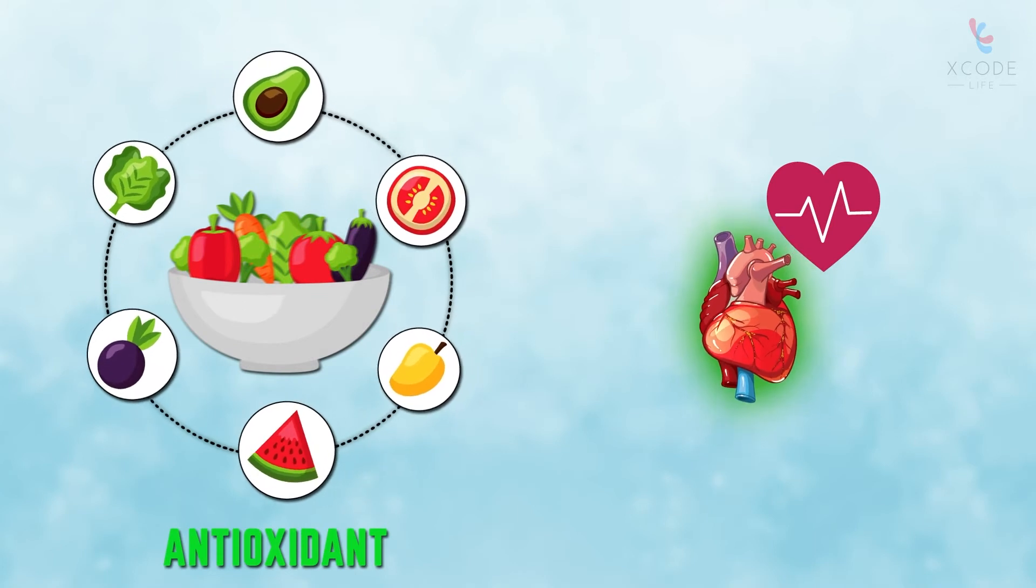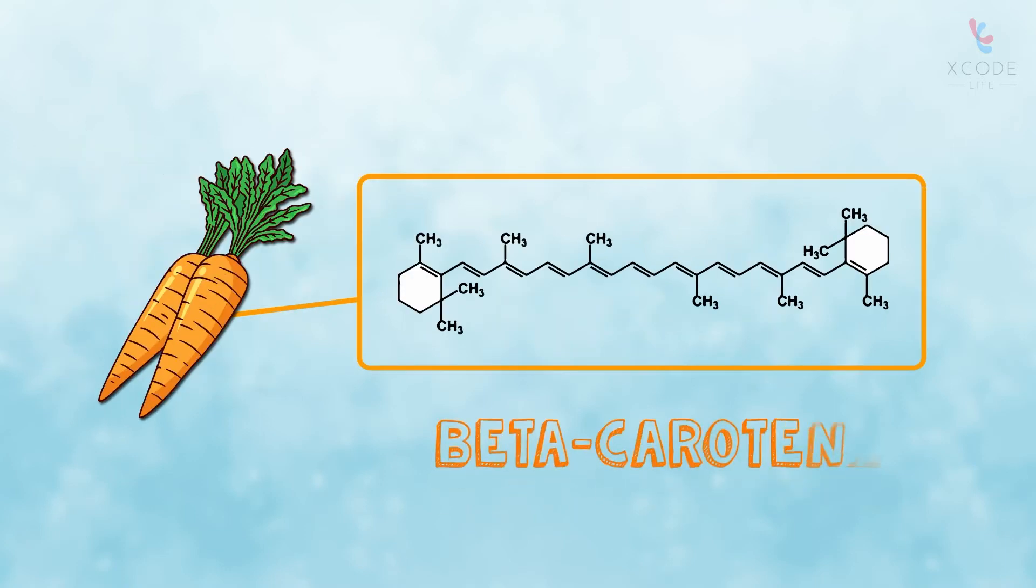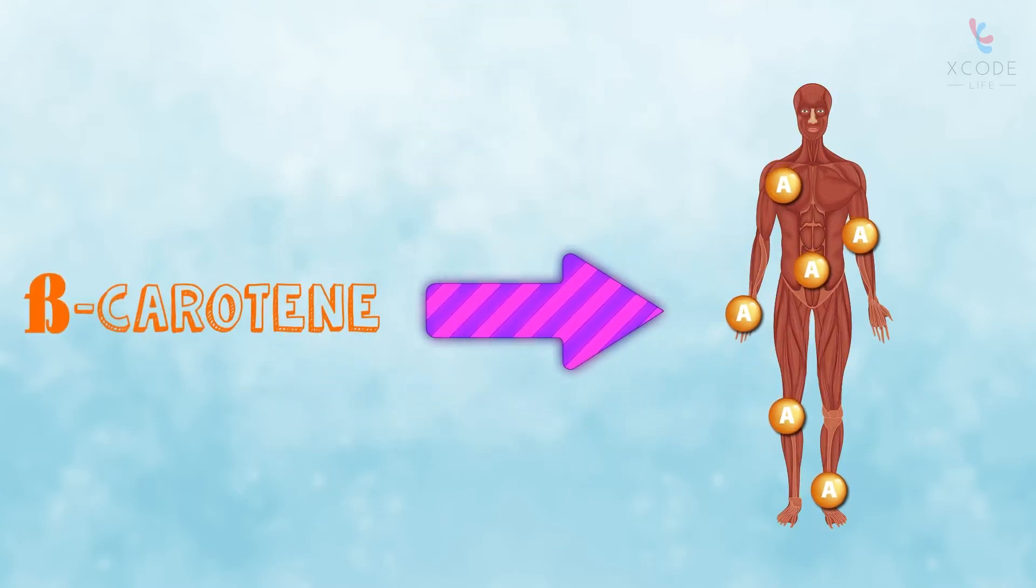We all know that carrots are a good source of vitamin A. They are a rich source of a molecule called beta-carotene. Beta-carotene is actually a provitamin. Provitamins are substances that are converted into active vitamins in the body.